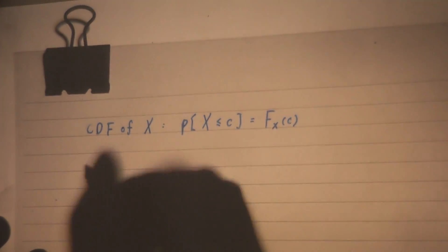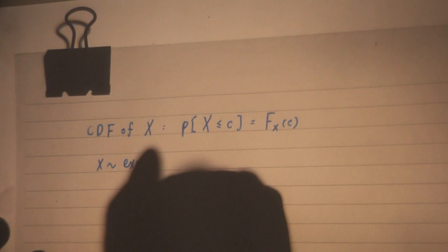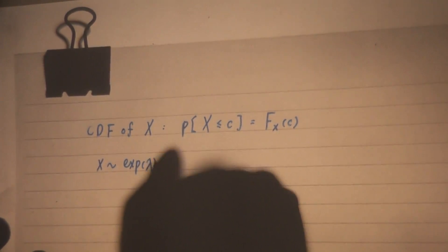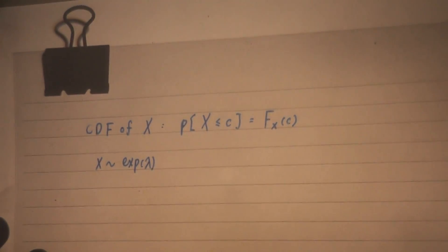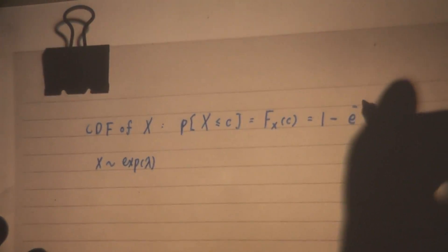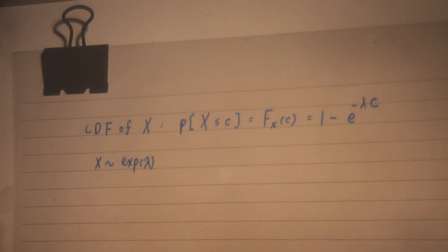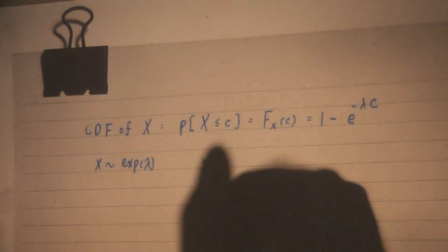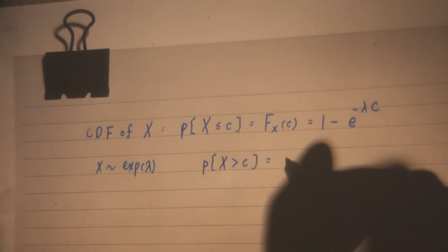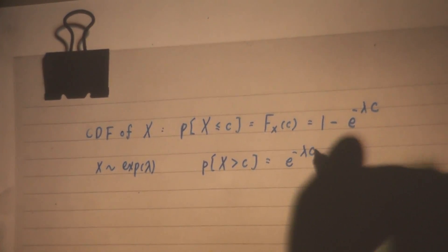If x follows exponential distribution with parameter lambda, then this is 1 minus e to the power of minus lambda c. Or alternatively, you can say probability that x greater than c is e to the power of minus lambda c.